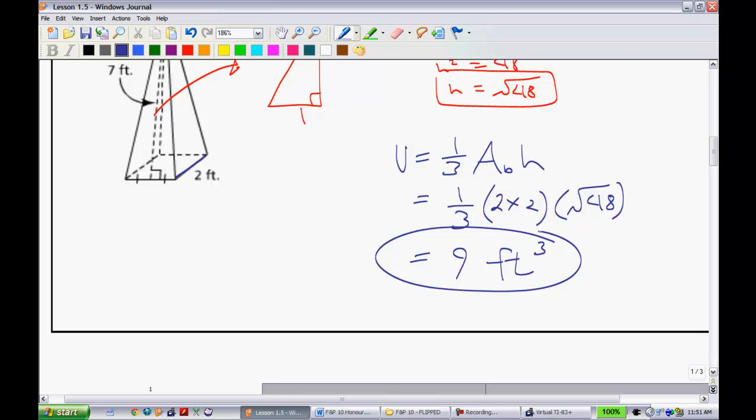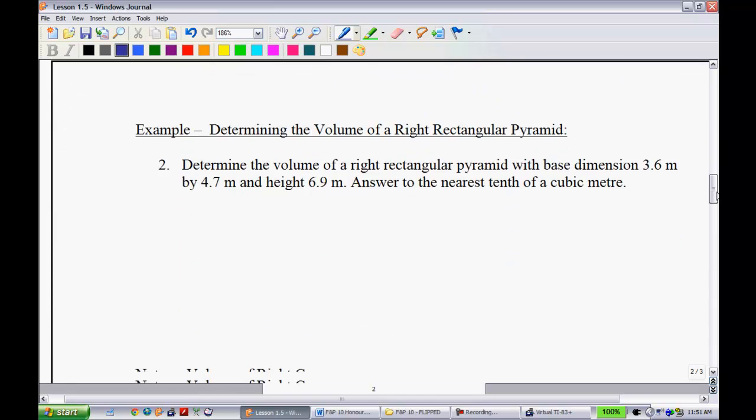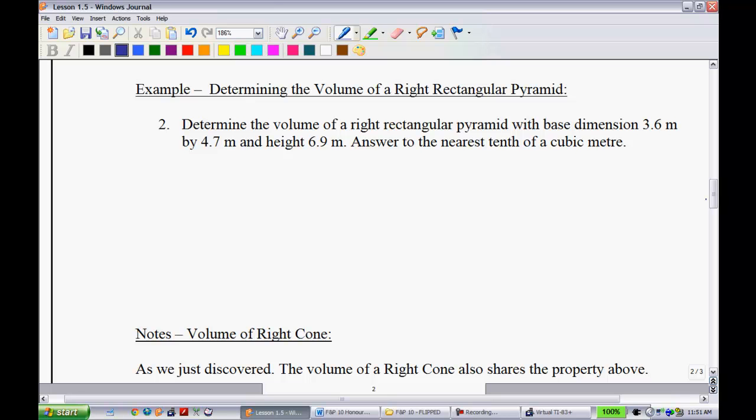First example. Turn the page. Next one we're going to do is working with the volume of a right rectangular pyramid. I think you'll find this one a little bit easier, a little bit less work. The volume of a right rectangular pyramid with base dimensions 3.6 times 4.7 and the height's given. So this one's a little bit easier. This would be a good one for you to try on your own just to make sure we're good to go.